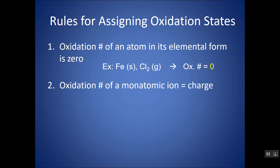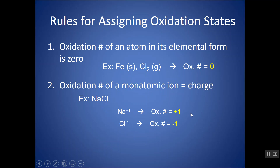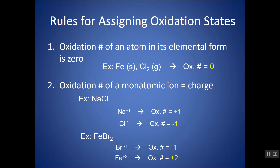The oxidation number of a monatomic ion is the charge. Something like NaCl is an ionic compound made up of ions Na+ and Cl−. The charges of these monatomic ions give the oxidation numbers. Sometimes you might have a transition metal with more than one charge, and you can figure out the oxidation number by the negative ion it's bonded to. Bromine has a minus one charge, so iron would have a plus two charge — this is iron(II) bromide.